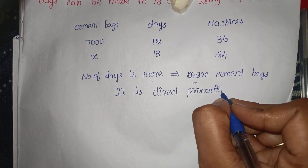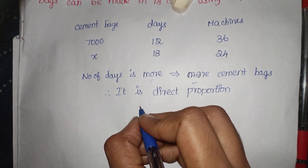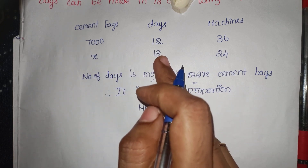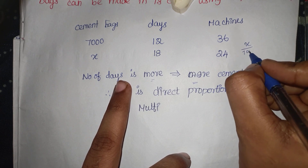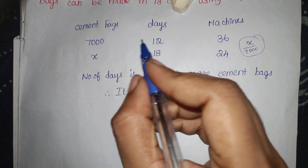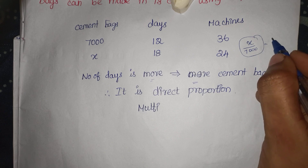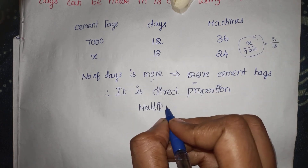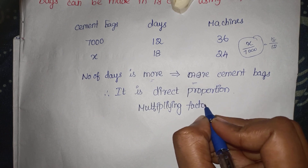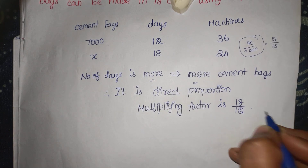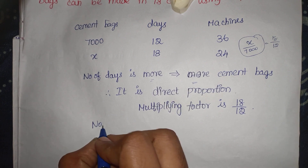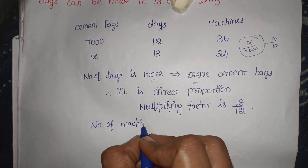It is direct proportion — variation. So it is direct proportion. That's why we have this multiplying factor. Now there is X. We can do 18. X by 7000 — so X by 7000. That answer is X by 7000 equals 12. So the multiplying factor is 18 by 12.